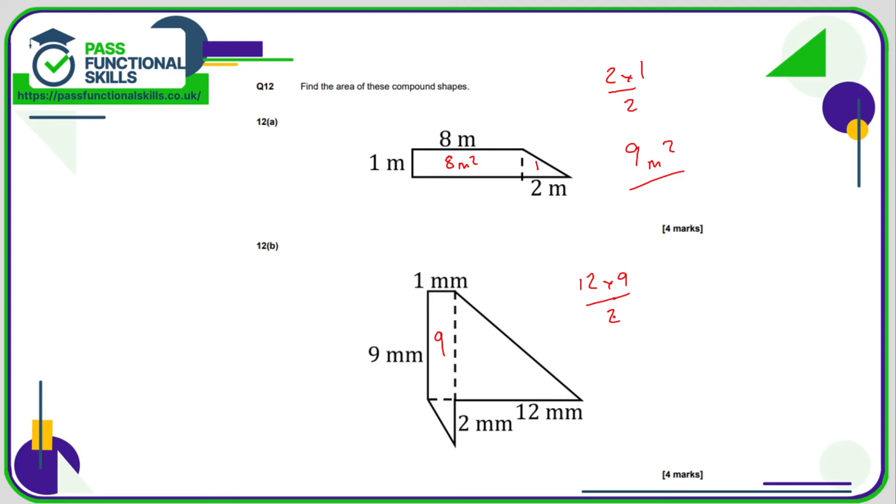So 12 divided by 2 is 6. 6 times 9 is 54. So this area is 54. And here we've got 2 by 1. 2 times 1 is 2. Divide that by 2 is 1. So 9 plus 1 plus 54 is 10 plus 54. So that is going to be 64 meters squared.